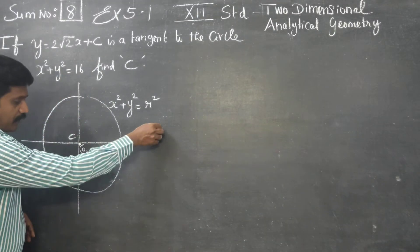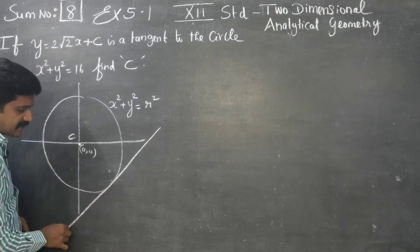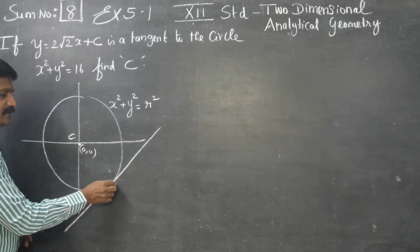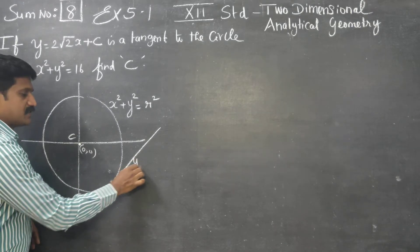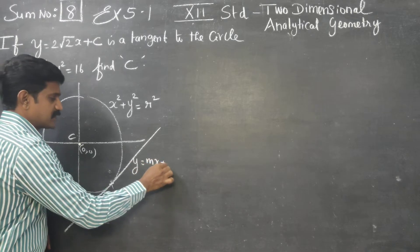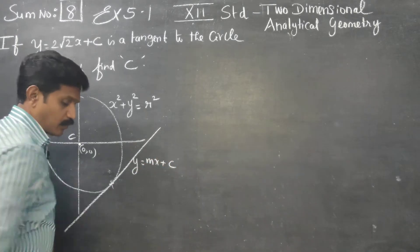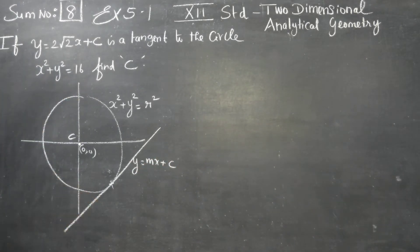If a line touches the circle, then it is called a tangent. The equation of that line can be written in the format y is equal to mx plus c.